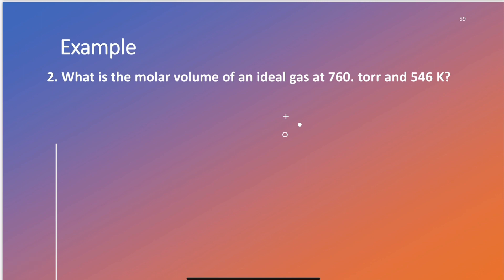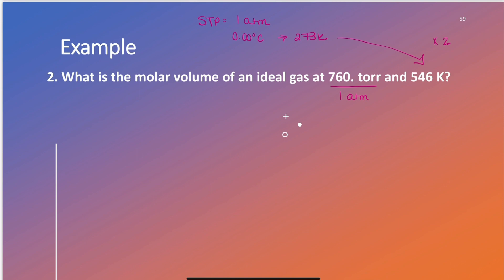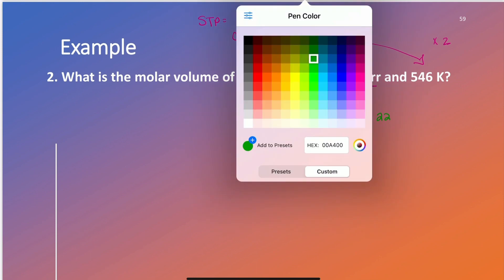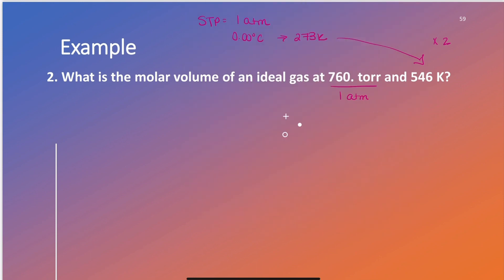What is the molar volume of an ideal gas at 760 torr and 546 Kelvin? A few ways to solve this. You can recognize that STP is 1 atmosphere and 273 K. This problem is at double the STP temperature and the same pressure, so since temperature and volume are directly proportional, molar volume is 22.4 liters at STP.